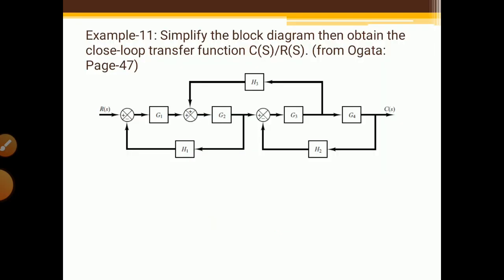The question is: simplify the block diagram, then obtain the closed-loop transfer function C(s)/R(s). C(s) is the output and R(s) is the input. The ratio of output to input is called the transfer function. To find this closed-loop transfer function, we have to reduce this block diagram to only one block using the reduction rules.